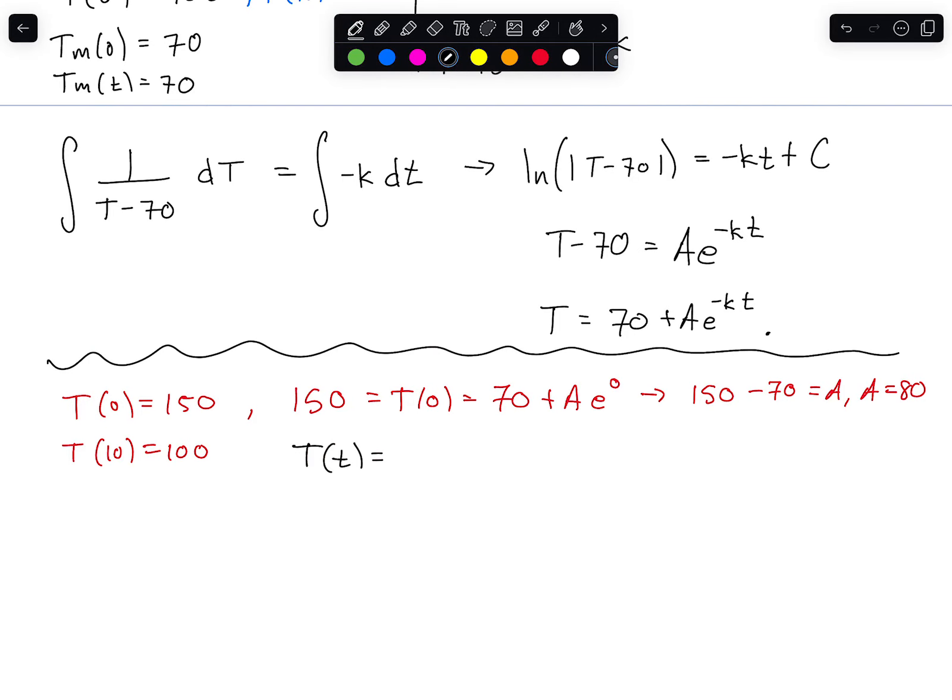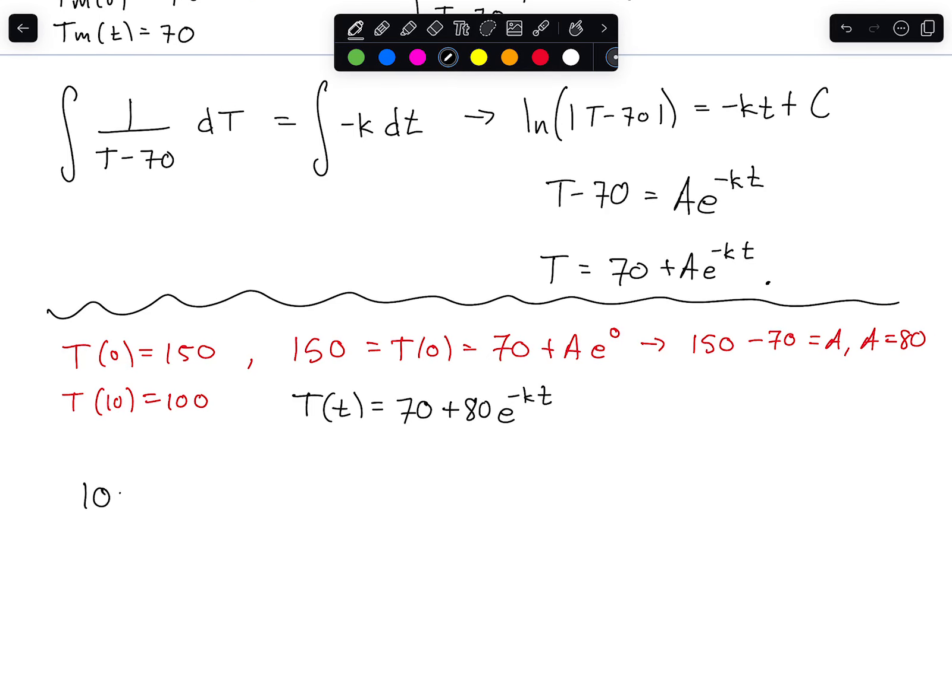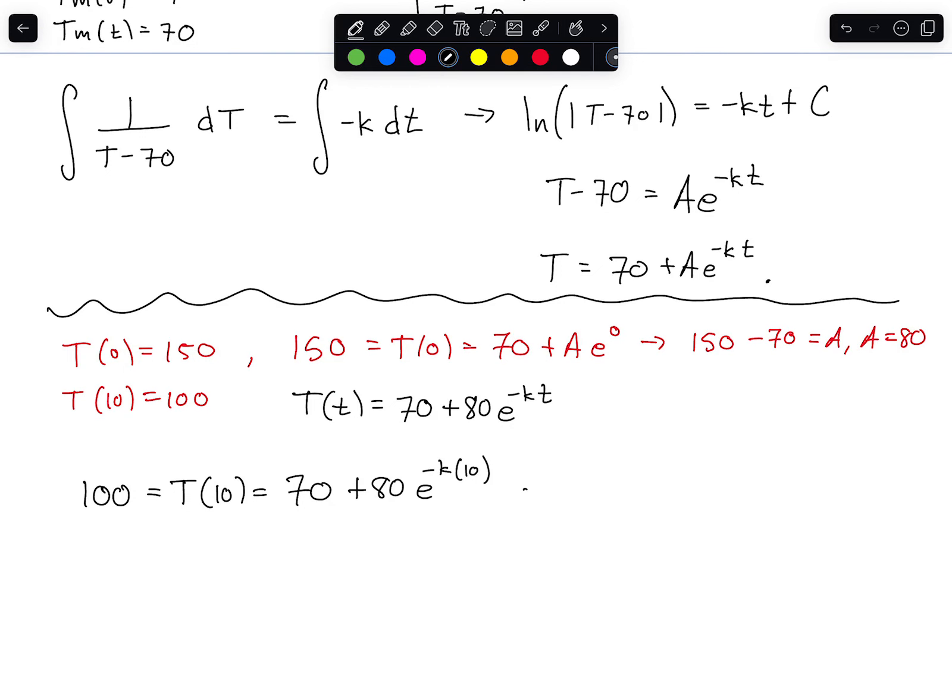So we've got a revised T, T of t, capital T, the temperature is now 70 plus 80, e to the minus KT. And now we can use that 100 is equal to what we get when we plug in 10. So 70 plus 80, e to the minus KT times 10. And we can sort that out. We can do our algebra there and get that K is equal to 1 over 10 natural log of 3 eighths. Let's see. I think that feels right. So that's right.